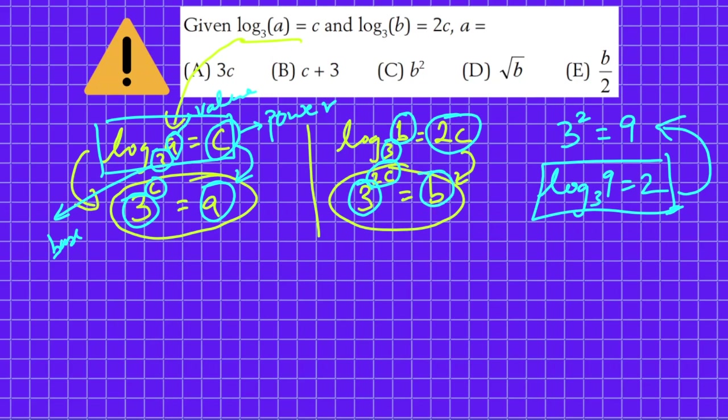So any value you can write very easily in the log format, or log format can be converted into the exponential format. I'll give you one more example: if you're writing 2 raised to power 3 equals 8, you can write this as log of 8 to the base 2 equals 3. You can verify this in your calculator. Now let's continue doing the question.